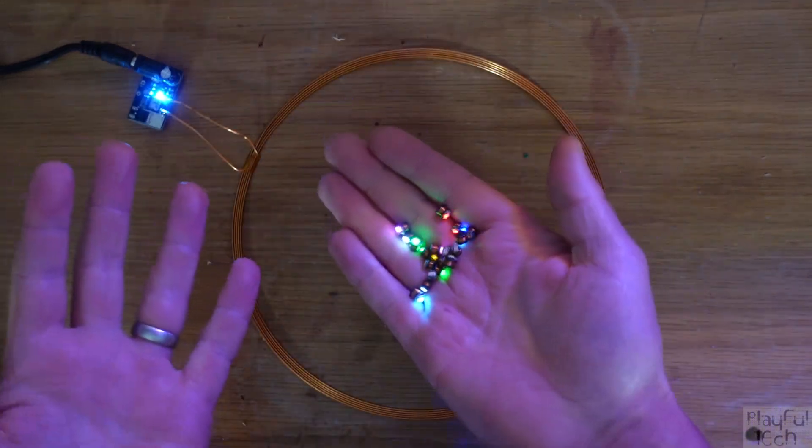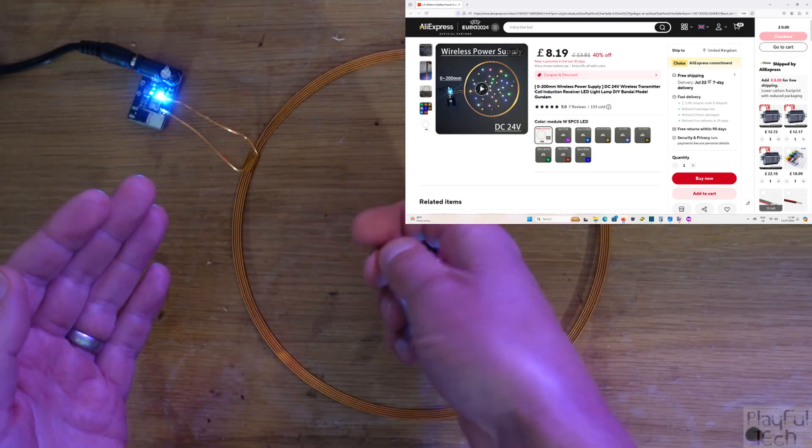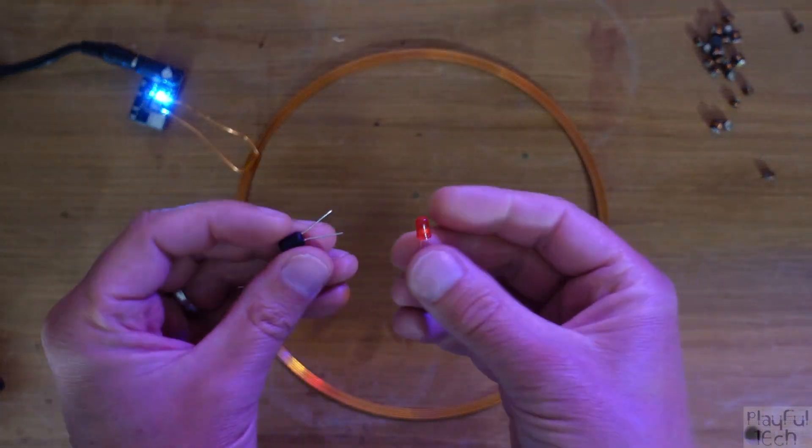Now you can buy these LEDs pre-made from places like AliExpress, but to show you just how simple this circuit is, you can actually make one of these yourself using just two components.